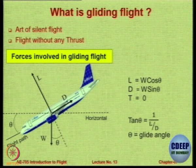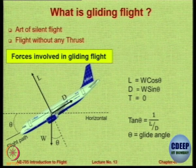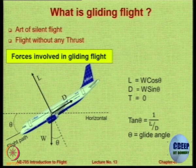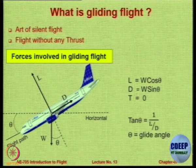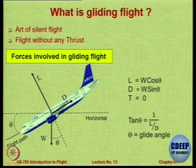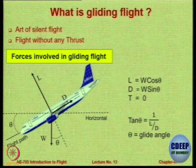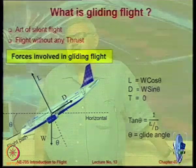From the force balance, tan theta equals D/L, or equivalently 1/(L/D). So if you want a lower glide path angle, you want a higher L/D ratio. L/D directly controls the angle during the glide. Aircraft with higher L/D will glide at a lower angle theta compared to aircraft with lower L/D.